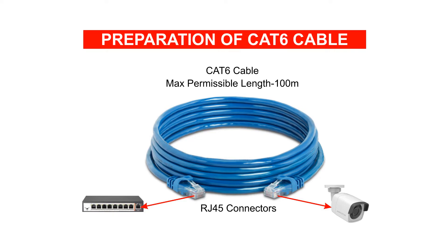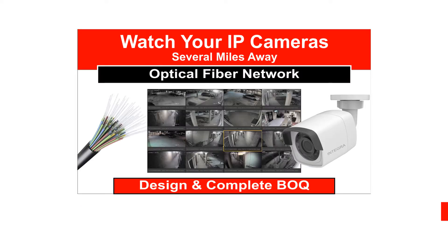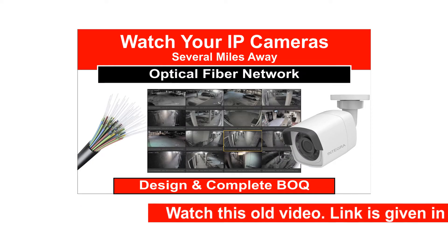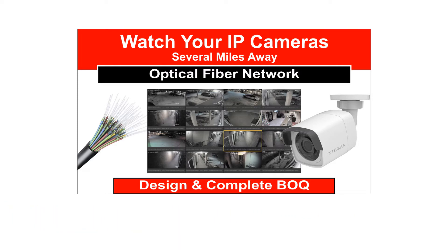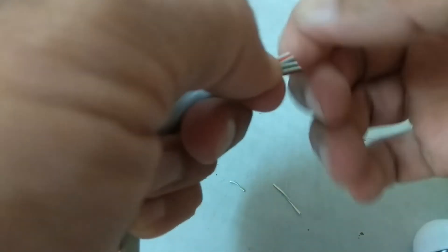First, we will prepare the Cat6 cable that will run between cameras and the PoE switch. The maximum length that a Cat6 cable can carry data without degradation is 100 meters, so always restrict the cable run between camera and switch to 100 meters. If the length is more, you may need to change the architecture or use optical fiber cables, which can carry signals for several miles without degradation. You may refer to our old video on connectivity using fiber cable — the link is in the description box.